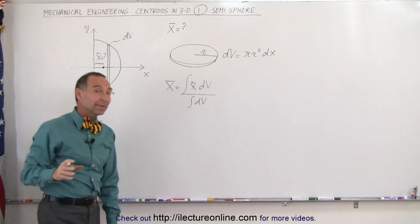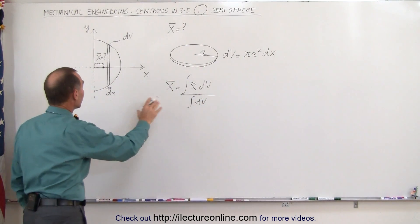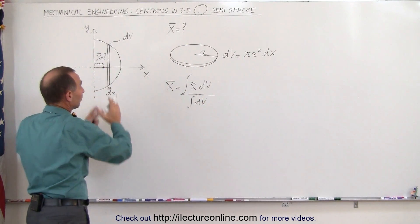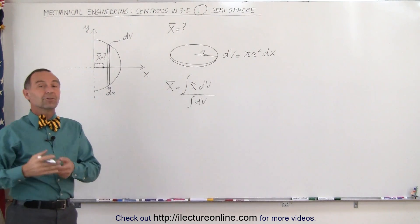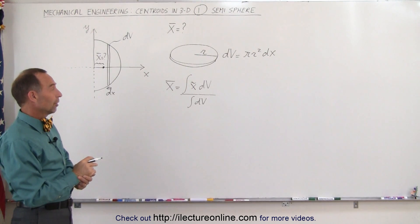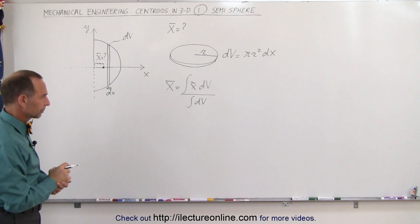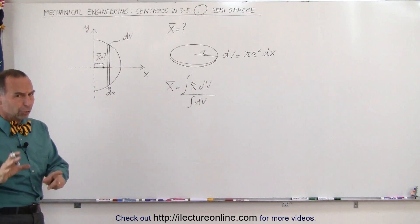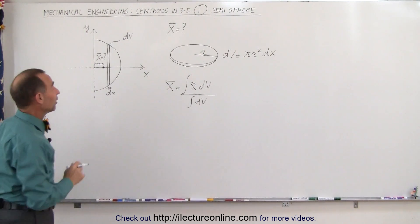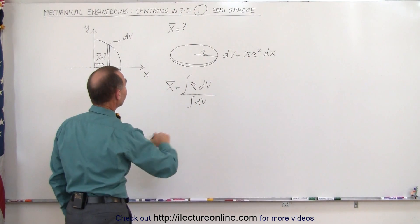The denominator is going to be the volume of the semi-sphere, which is easy — it's one-half the volume of the sphere, which is four-thirds π r cubed. That is the volume of the semi-sphere.